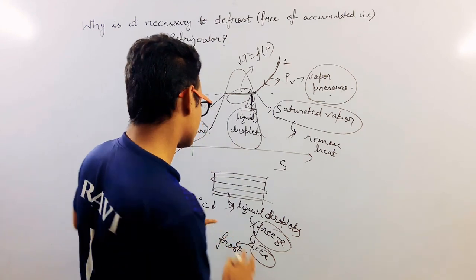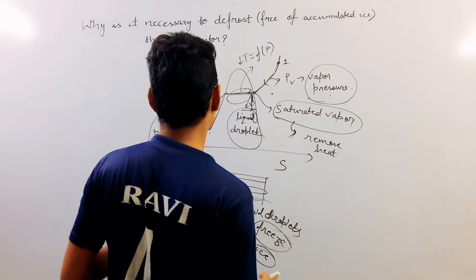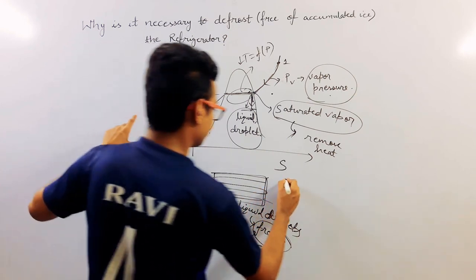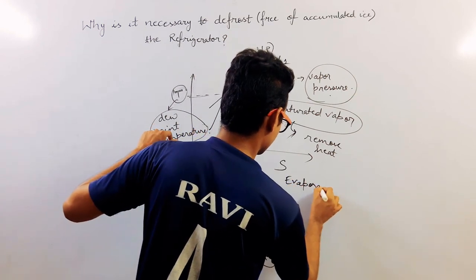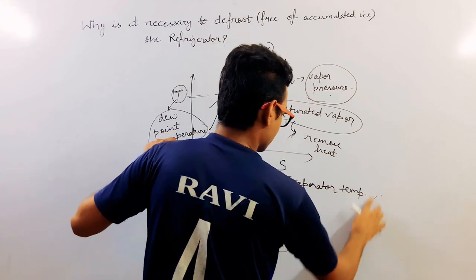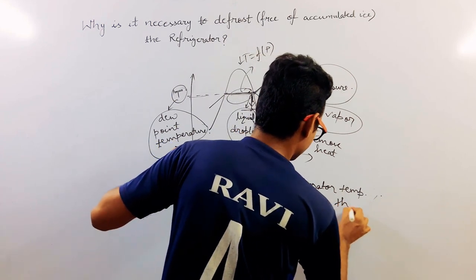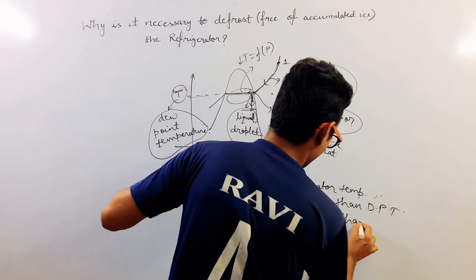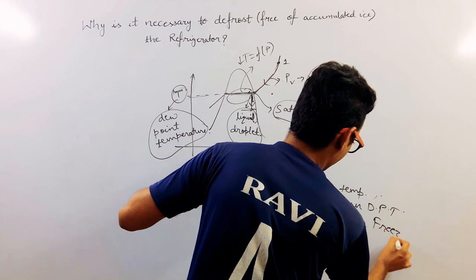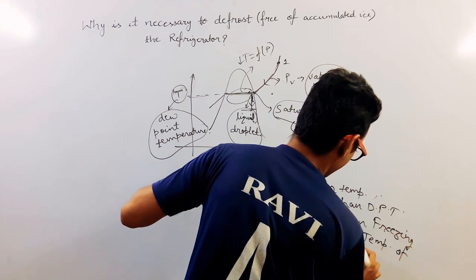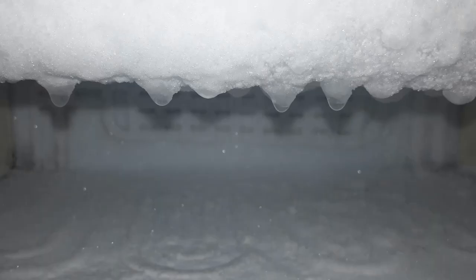So this is how the frost formation happens in case of our household refrigerator. The condition is that the evaporator temperature must be less than the dew point temperature DPT, and it must be less than freezing temperature of water, so that water can freeze and it will form ice. And that is what is manifested in terms of frost formation in case of refrigerator.